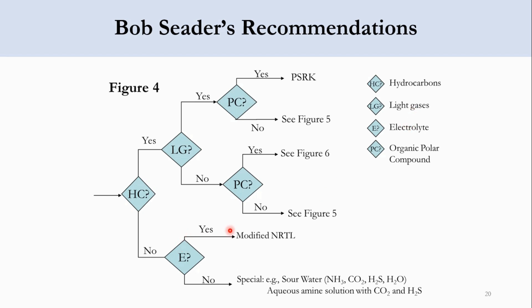If it is an electrolytic system, use modified NRTL. If it is non-electrolytic, check for special systems such as sour water, aqueous amine solution with CO2 and H2S. If hydrocarbons are present, check whether light gases are involved. If light gases and organic polar compounds are involved, use PSRK, an extension of SRK method.